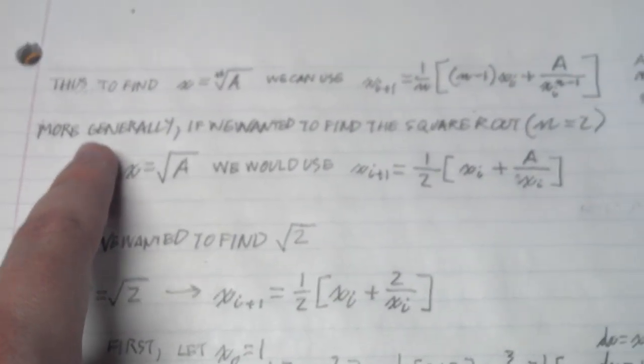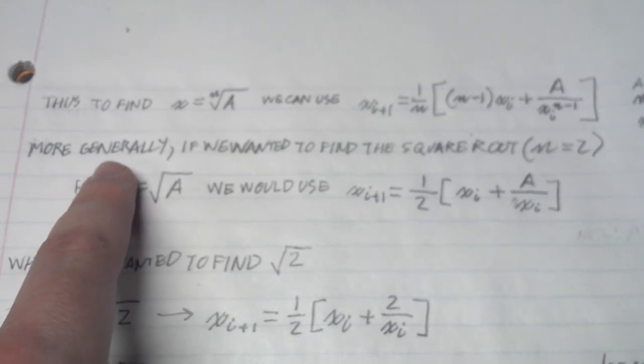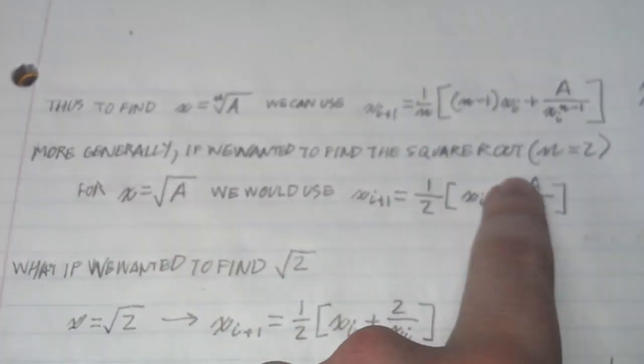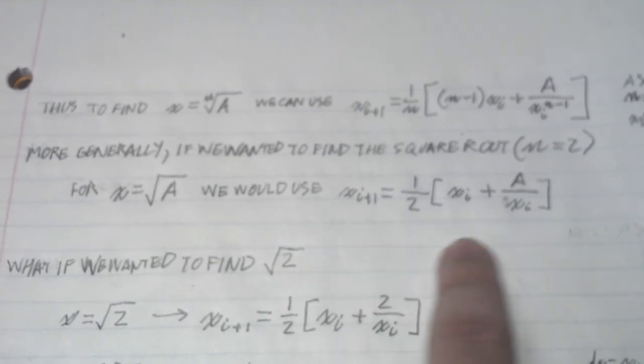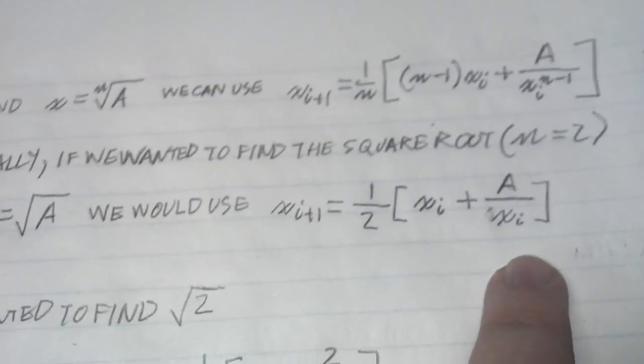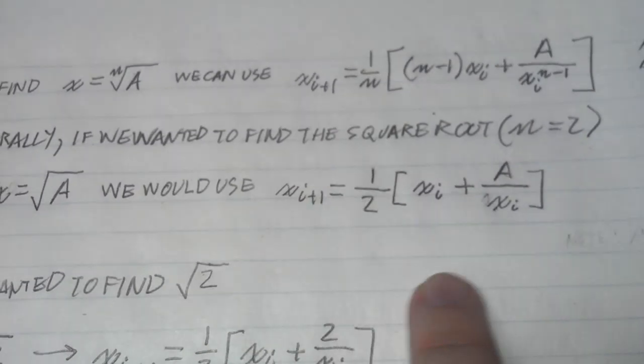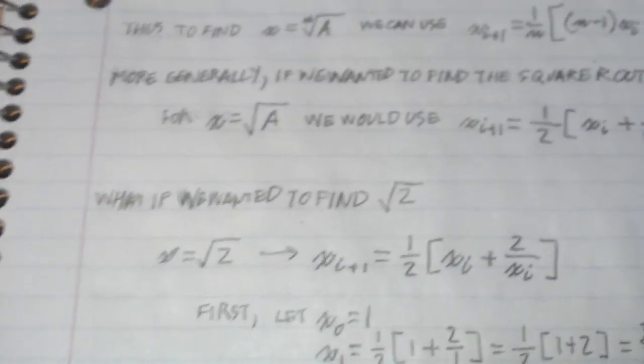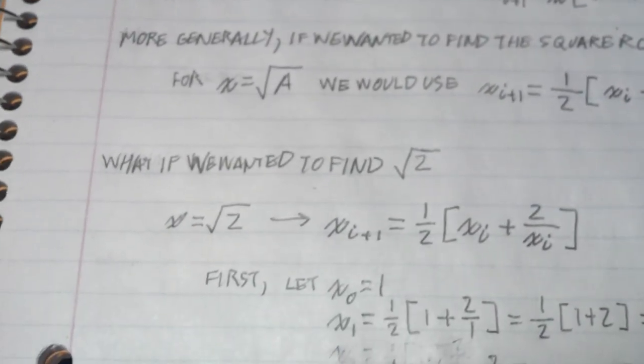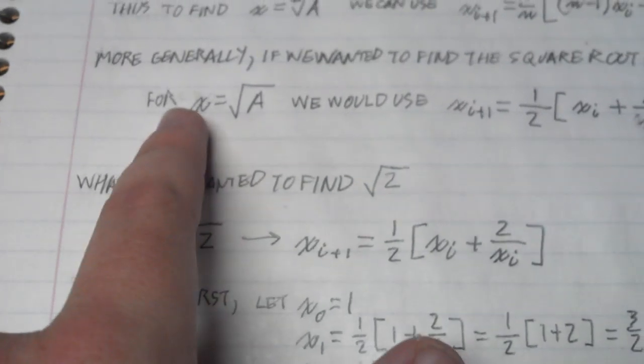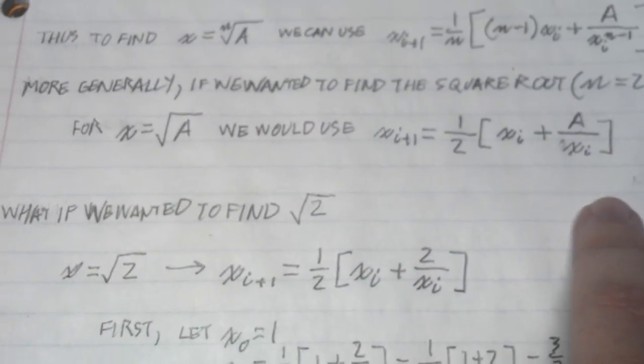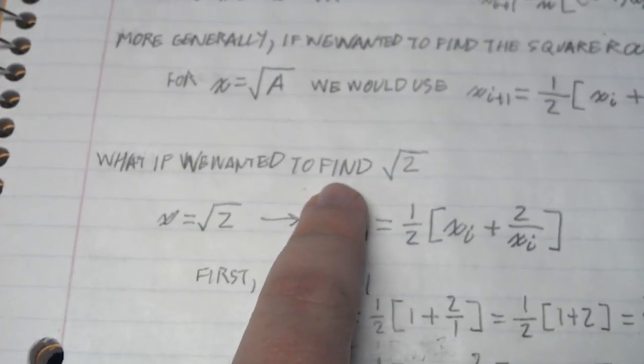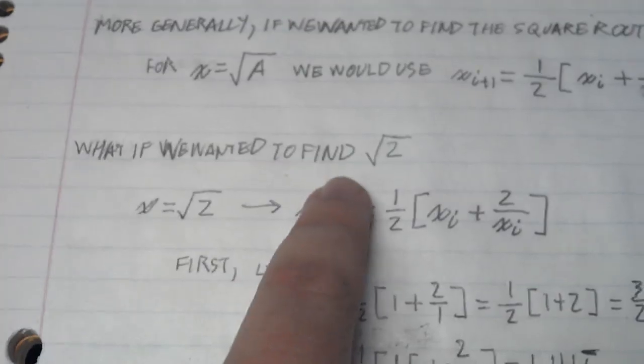More generally, if we wanted to use this equation to find the square root, or n equals 2, we would simply use a smaller version of this equation. So what if we want to find the square root of 2?